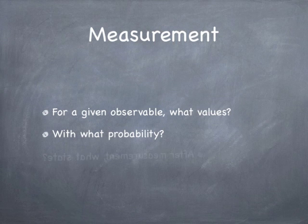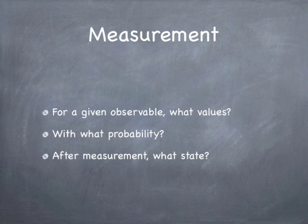And finally, after the measurement is complete, what state will the system be in? The answer is it will be in the eigenstate that corresponds to the eigenvector that corresponds to the eigenvalue that was actually measured. At least that's the interpretation we're going with in this course. There are a lot of different people who have different ideas about how measurement actually works, but this is the most straightforward traditional interpretation.